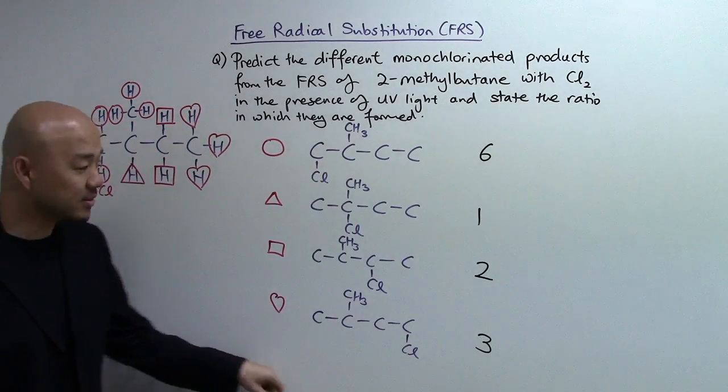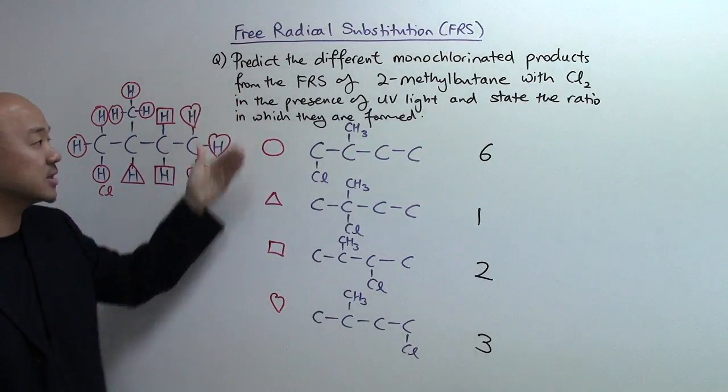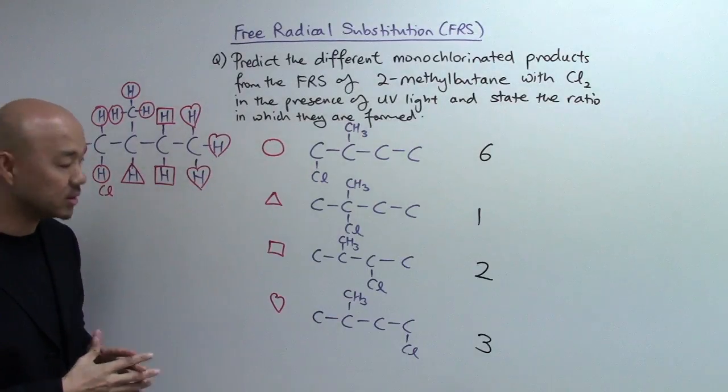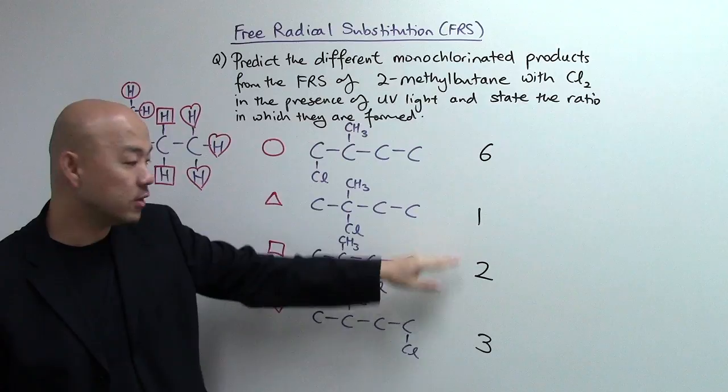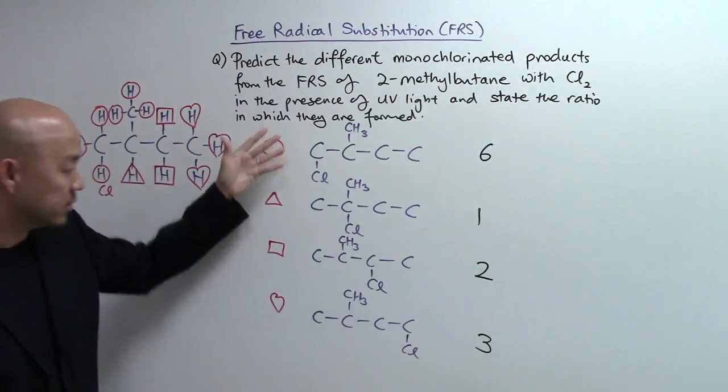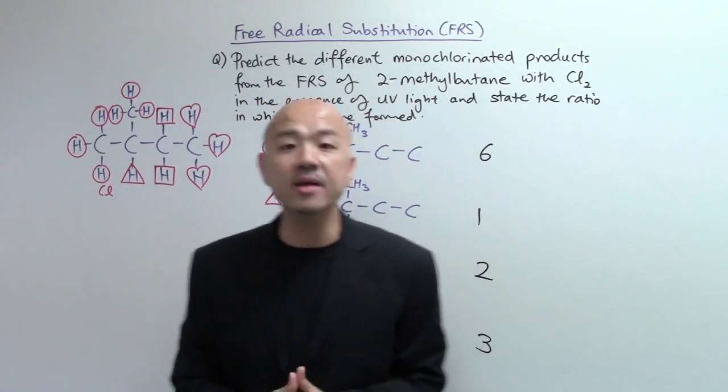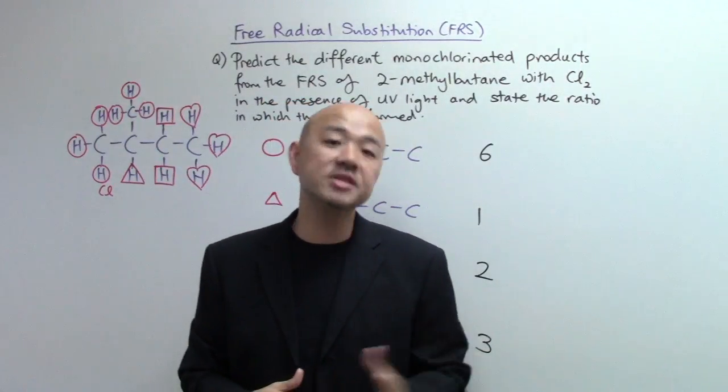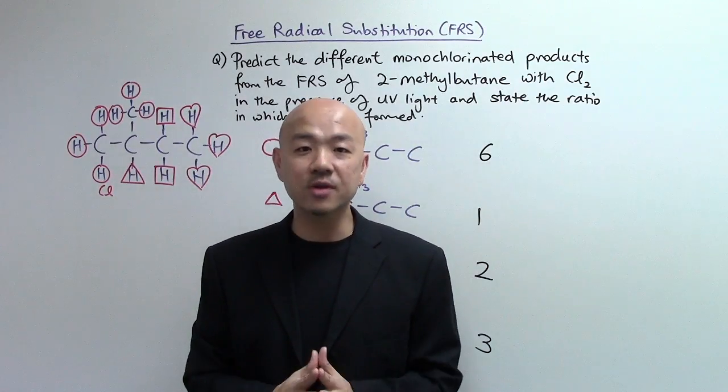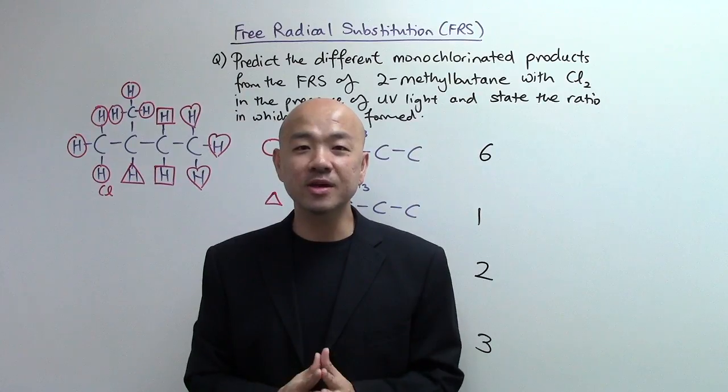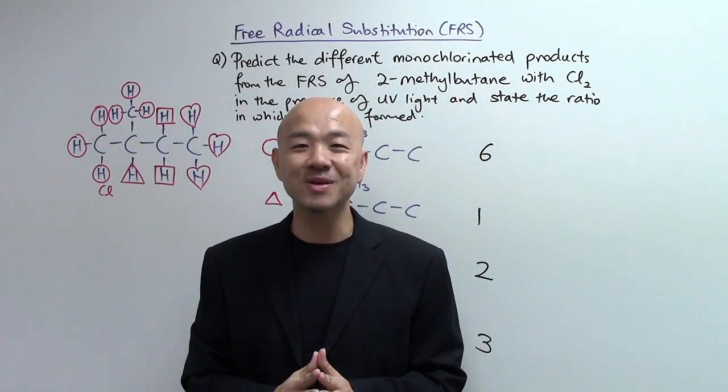So once again there are four different monochlorinated products that you can get from the free radical substitution of 2-methylbutane. And the ratio will be in the order of 6:1:2:3. And you can see the structure is here. This free radical substitution is a very important reaction mechanism for alkanes. I hope you enjoyed the video and learned a great deal from it. Feel free to share this with your friends and I look forward to seeing you back in the next video. Thank you.